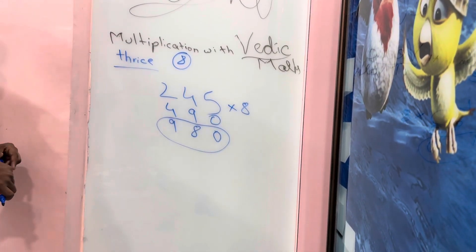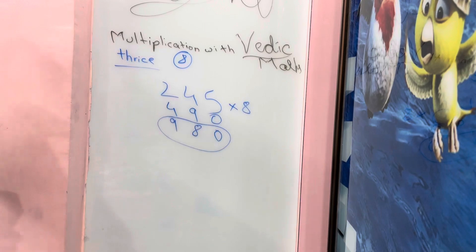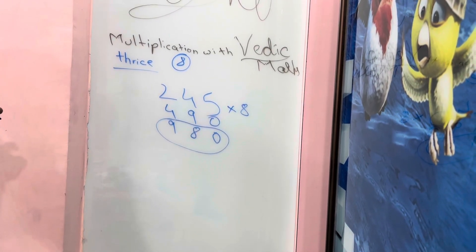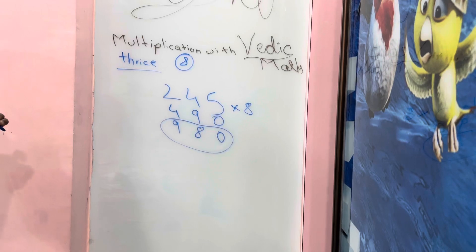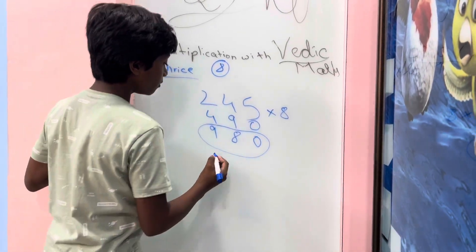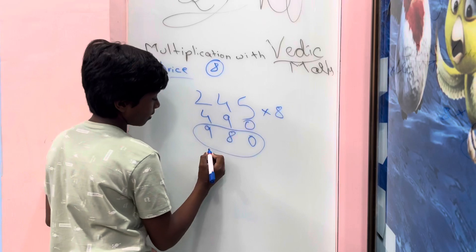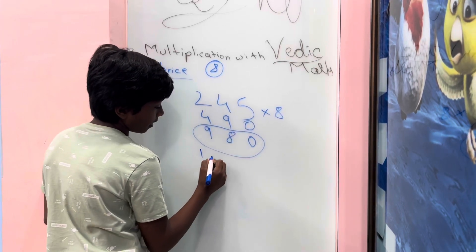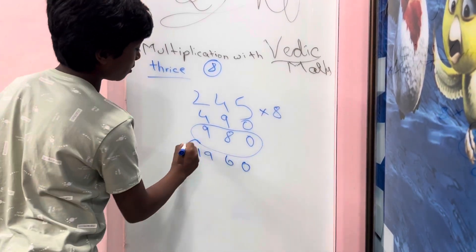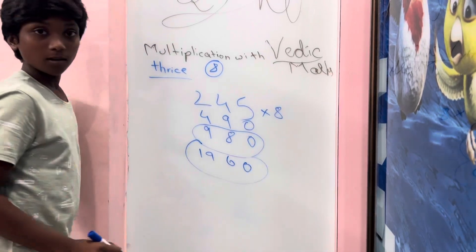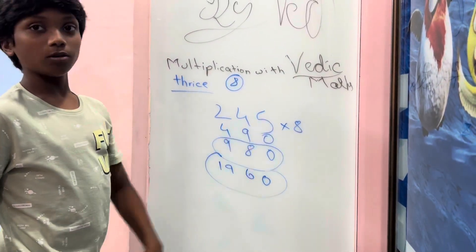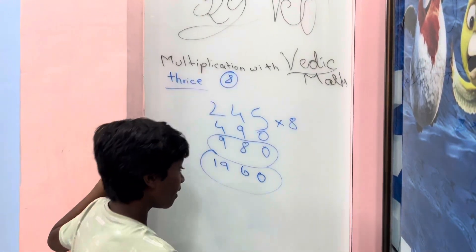Sorry, let me redo that — 960 is the answer for 245 into 8. Now let's verify it in the manual way.